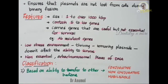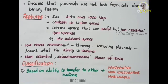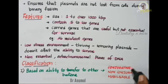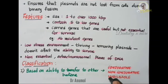Moving on to the classification of bacterial plasmids. The first classification is based on the ability to transfer to other bacteria. They are classified into conjugated plasmids, non-conjugated plasmids, and mobilizable plasmids.